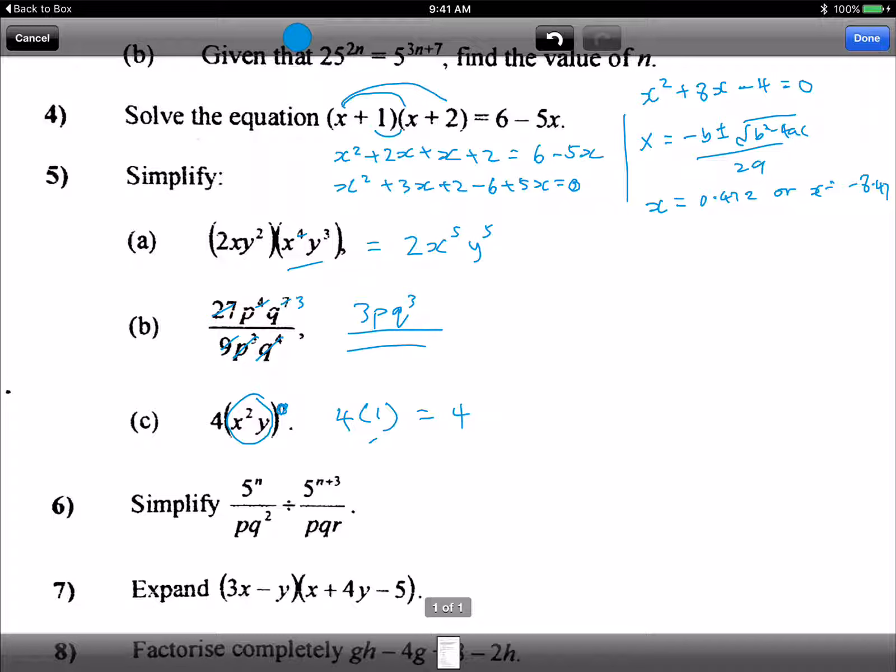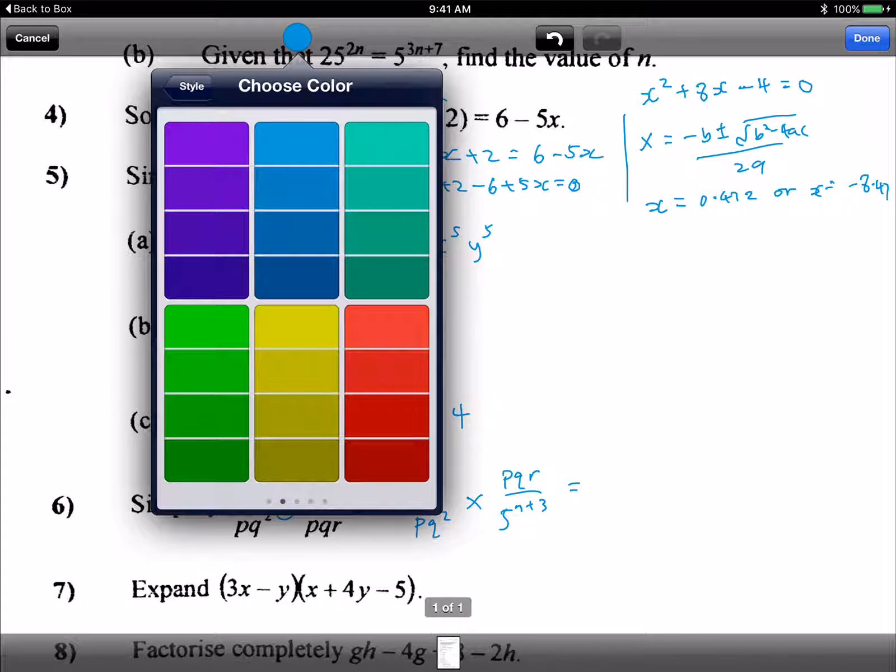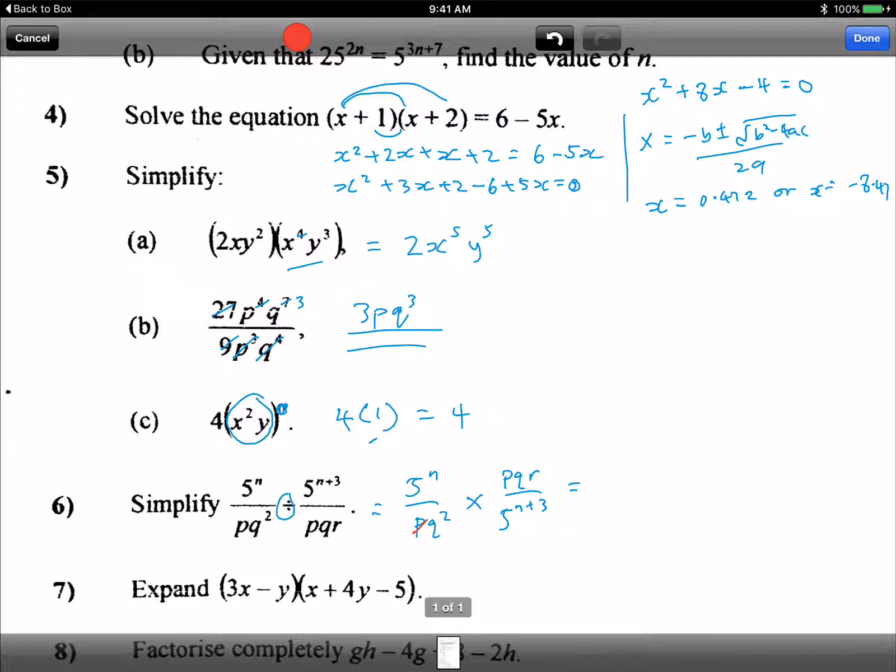Okay next, here now we have a divide, you must change to what? Times, yes. All right so 5 to the power n over p cubed squared times p cubed r over 5 to the power n plus 3, right. And then I combine. Now before I combine I can do some cancellation. What to cancel? The p and the p gone, p cubed and p cubed gone.